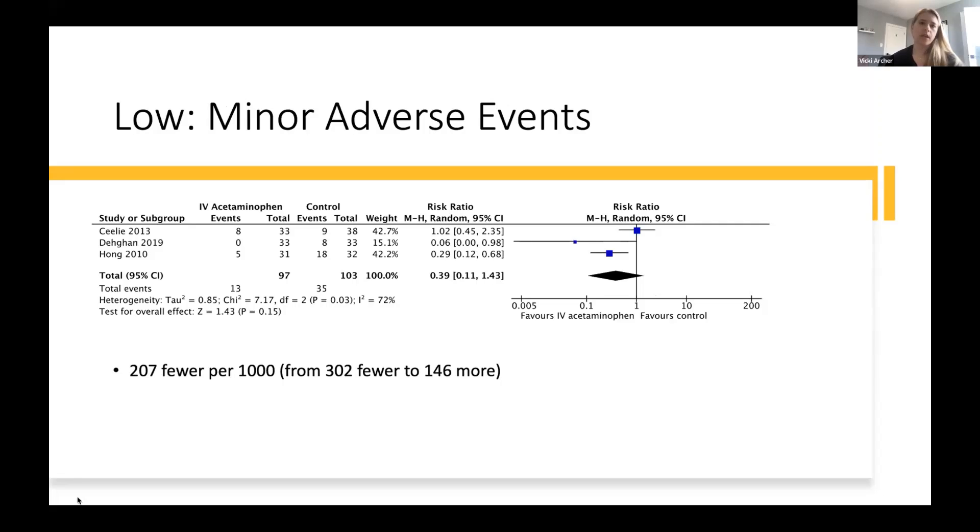Minor adverse events were then assessed, and this combines nausea, vomiting, acne, tachycardia, and urinary retention. We again have low-quality evidence suggesting that there's a decrease in minor adverse events when IV acetaminophen is used in conjunction with opioids compared to opioids alone. We found a risk reduction of 0.39%. This translates into 207 fewer per 1,000 minor adverse events, with a confidence interval ranging from 302 fewer to 146 more. We wanted to see a reduction of at least 35%, again, using data from trials in this topic, which we did achieve with our point estimate and with the lower end of our confidence interval.